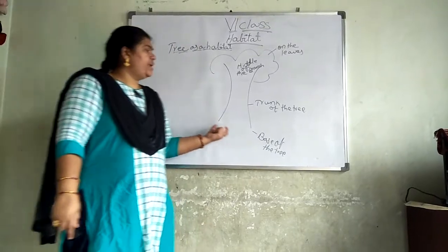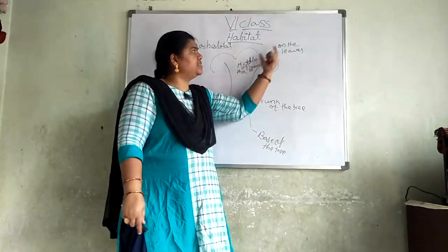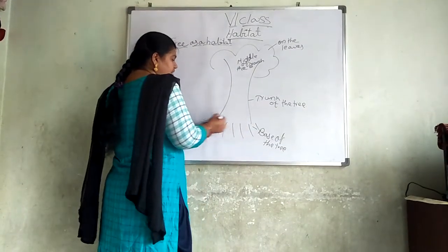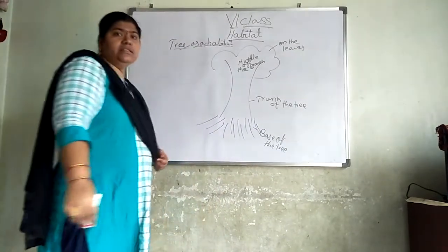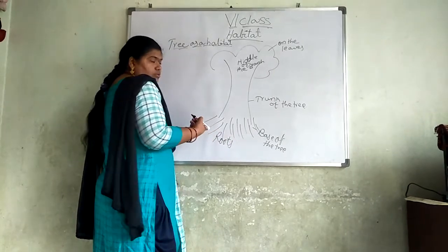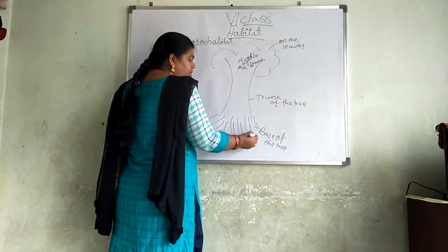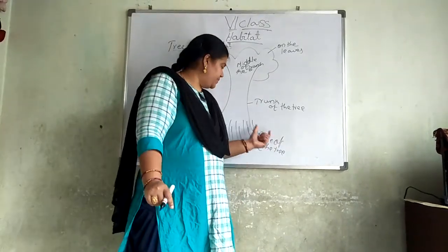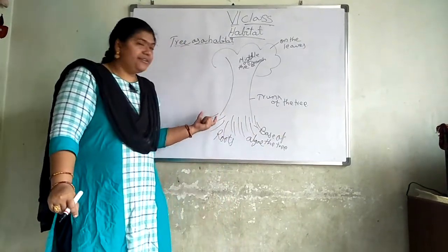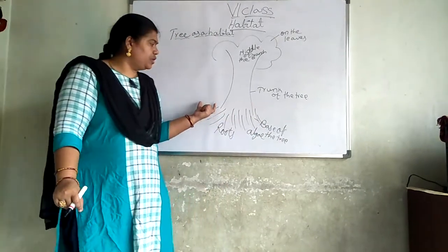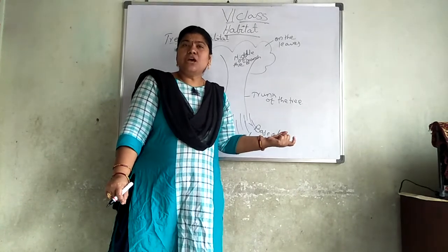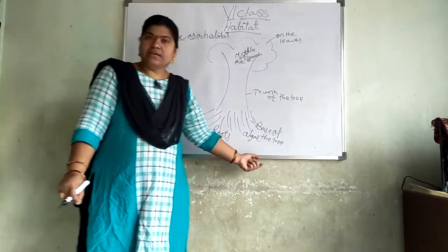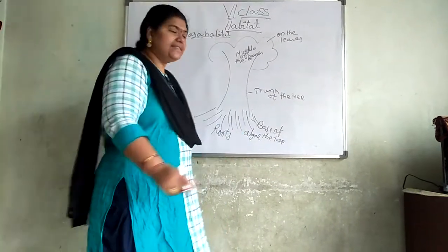Coming to tree as a habitat — we can see the base of the tree, trunk of the tree, middle of the branches, and on the leaves. At the base of the tree, the roots will be penetrated. The roots will be very strong and will penetrate out into the soil. On these roots and at the base, we can see that algae will be present — the green velvet color substance. Why will it be present here? When it is raining, because of the stagnated water near the roots and the base of the tree, that particular place will have algae.